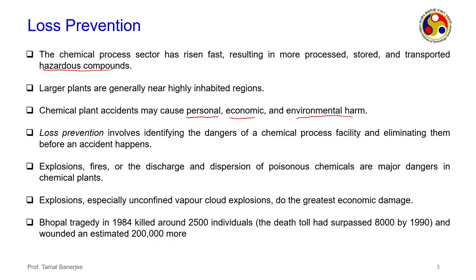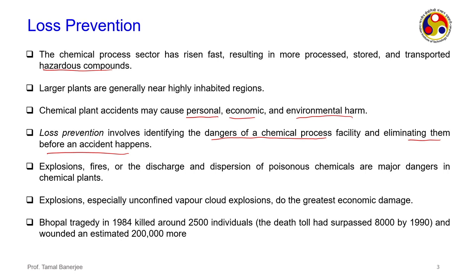Loss prevention, in a single sentence, involves identifying the dangers of a chemical process facility and eliminating them before an accident occurs. You should know beforehand what factors may influence your chemical process. You should have leeway — pressure can increase to a certain extent — and you should have pressure relief valves so they burst and stop the reaction, or coolant arrangements to cool down the temperature if a runaway reaction occurs.